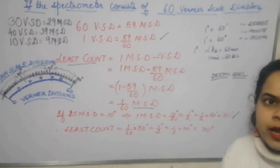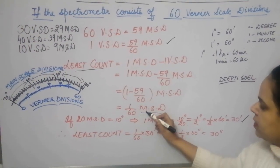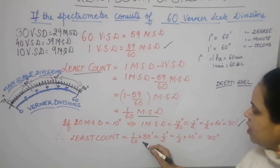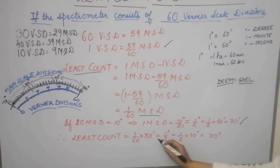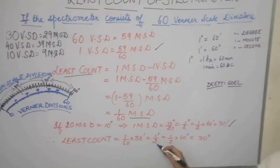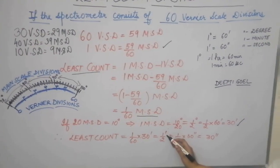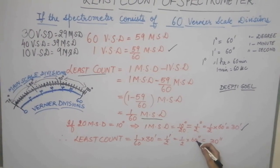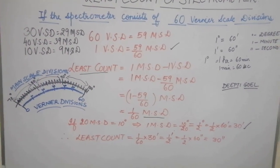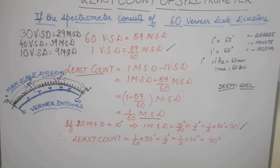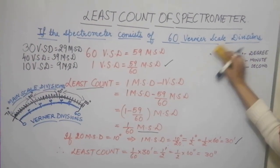To calculate the least count, we substitute the value of 1 MSD into the formula. Least count = 1/60 of MSD, and 1 MSD = 30 minutes. So 60 and 30 cancel to give half a minute. Converting to seconds: half a minute equals 30 seconds. That is how you calculate the least count of this spectrometer.